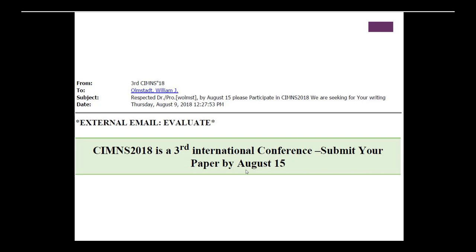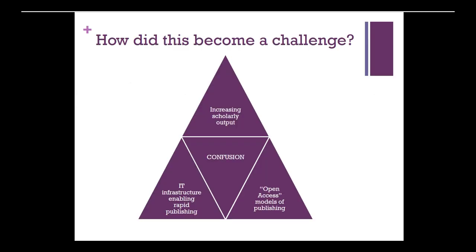I told our faculty member I didn't think she should provide any information, and it's a good lead-in to talk about how this has become a problem. These kinds of aggressive email tactics and fake websites are really a result of increasing scholarly output — just more things being published — so-called open access models of publishing, which is a model that passes along some costs of publishing to the author.